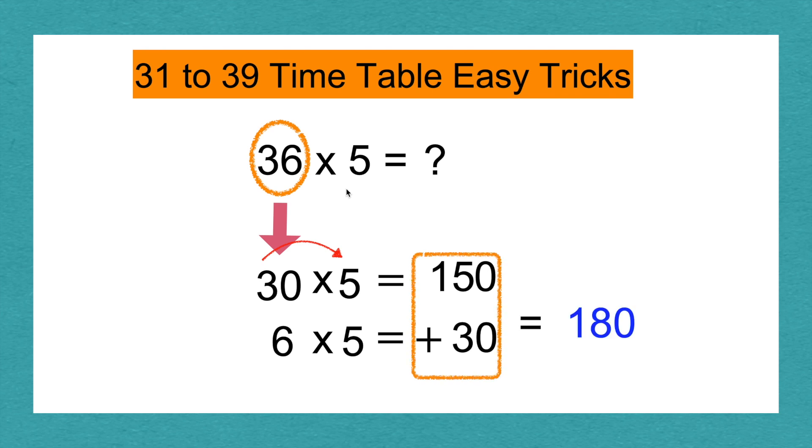150 plus 30 equals 180. 180 is our answer. And 36 times 5 equals 180.